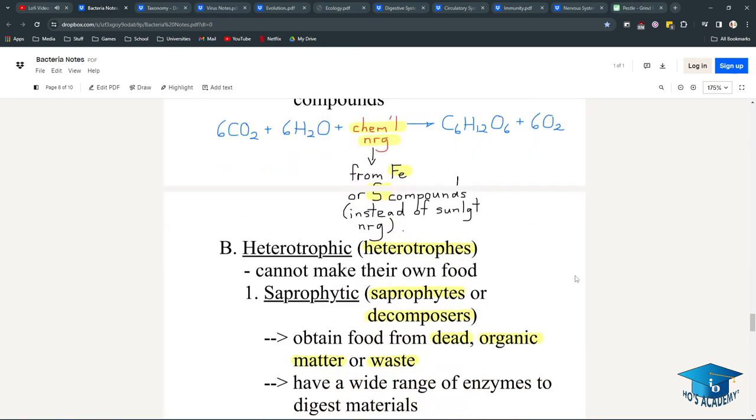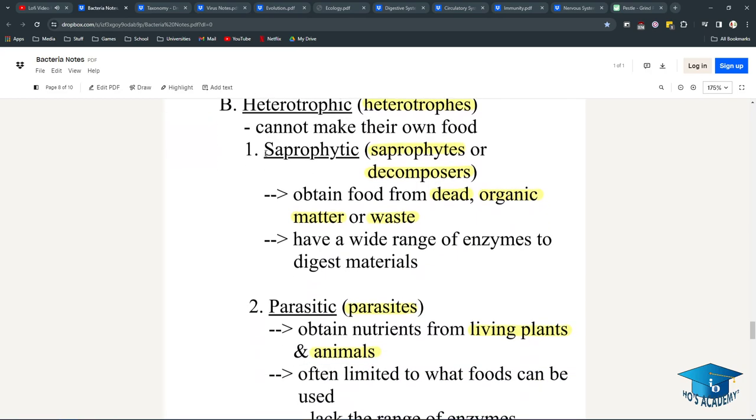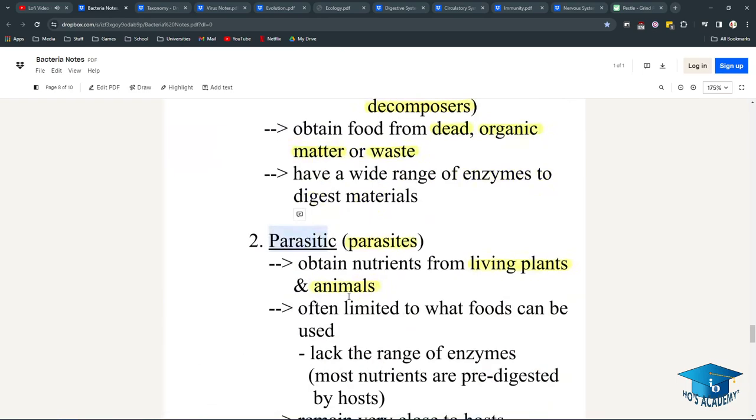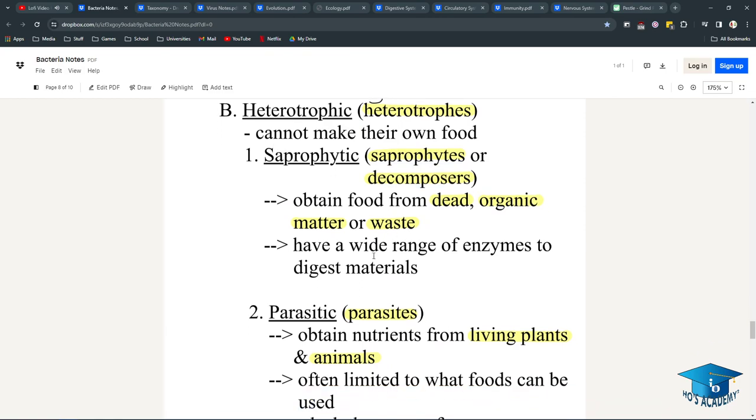There's also heterotrophic, meaning they cannot make their own food. They can be either saprophytic or parasitic. Saprophytes or decomposers obtain food from dead organic matter or waste, and they have a wide range of enzymes to be ready for any kind of waste they come across to digest and use as food.